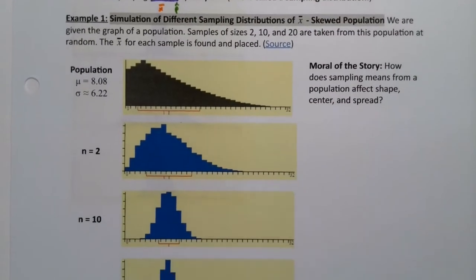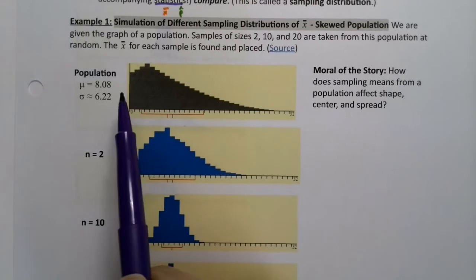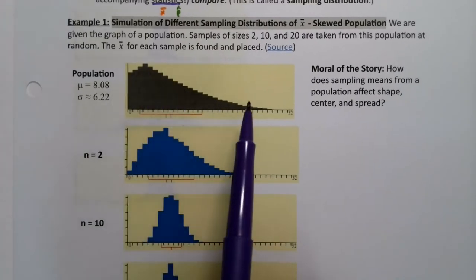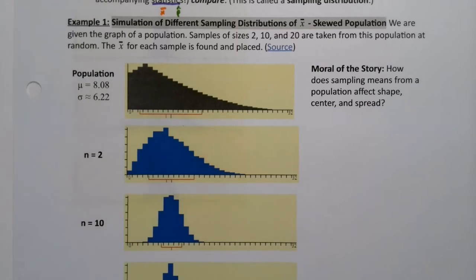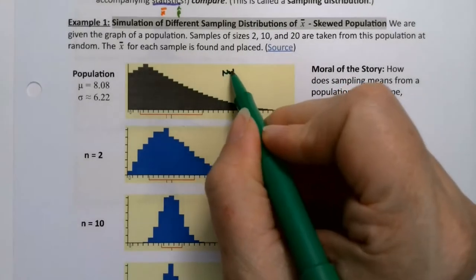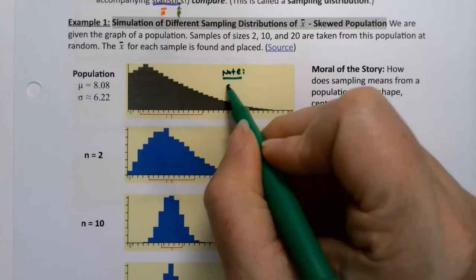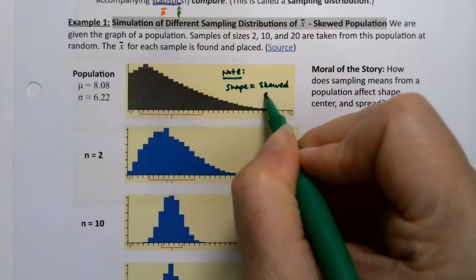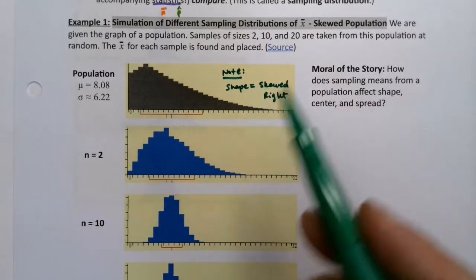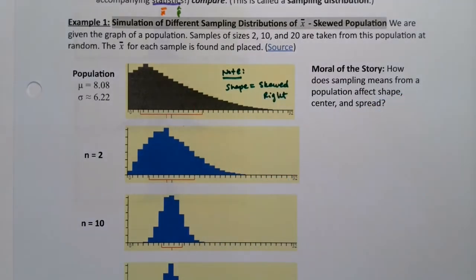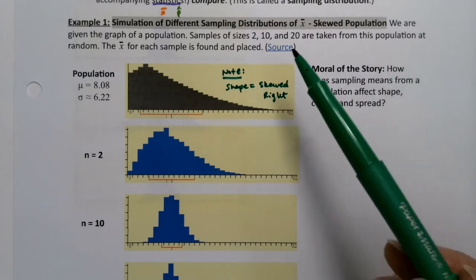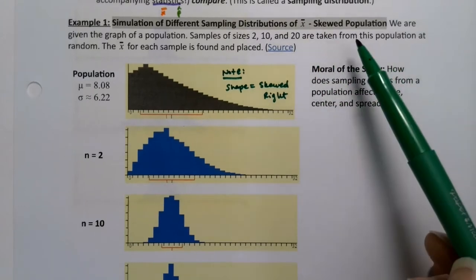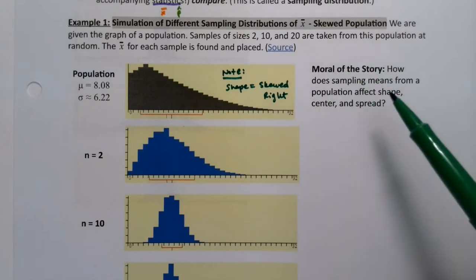Suppose you have a population — we have that population drawn right here — and you can tell that's a skewed right population. So we note its shape is skewed right. We learned about that back in chapter 2: when you have a tail over to the right, it's skewed right. We took samples from this population of size 2, 10, and 20, and we want to note some things about what's happening.